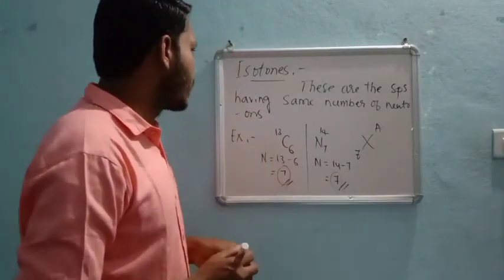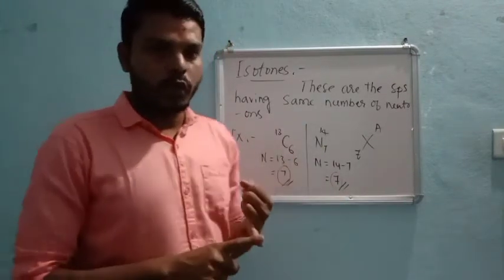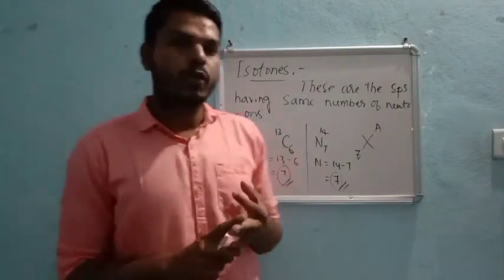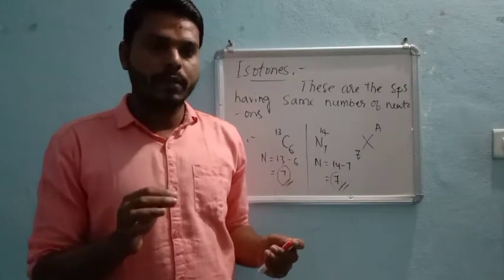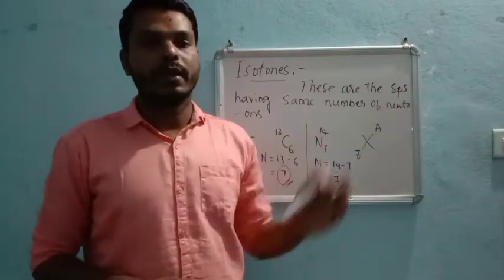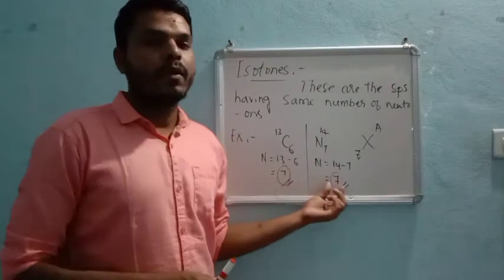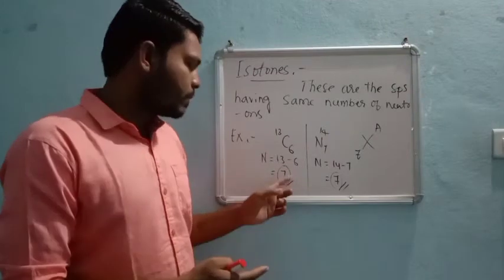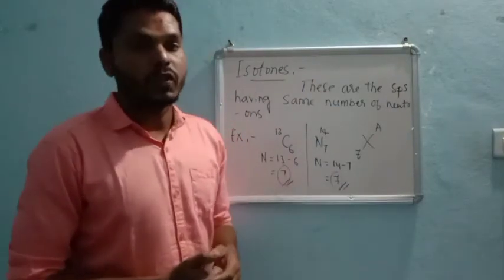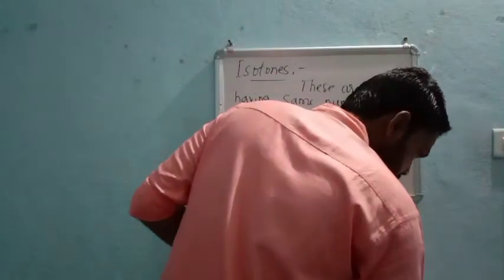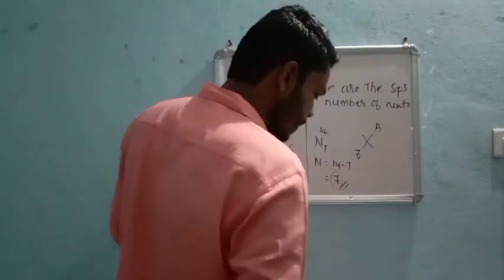So to summarize: isotopes have the same atomic number but differ in mass number; isobars have the same mass number but differ in atomic number; and isotones have the same number of neutrons. Now the next topic is fundamental particles.